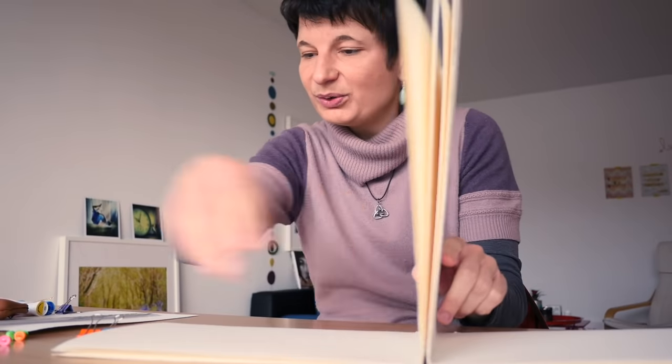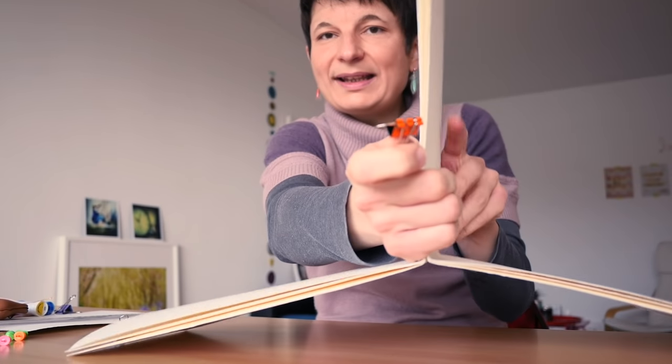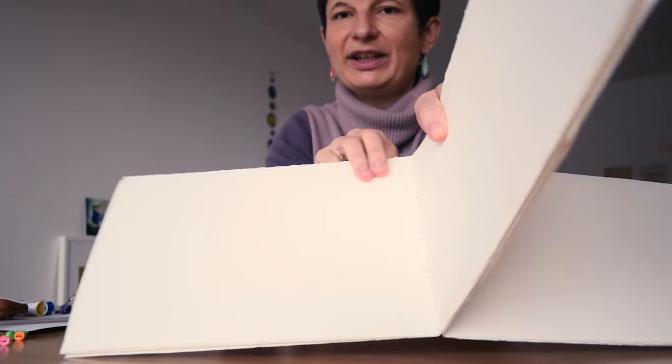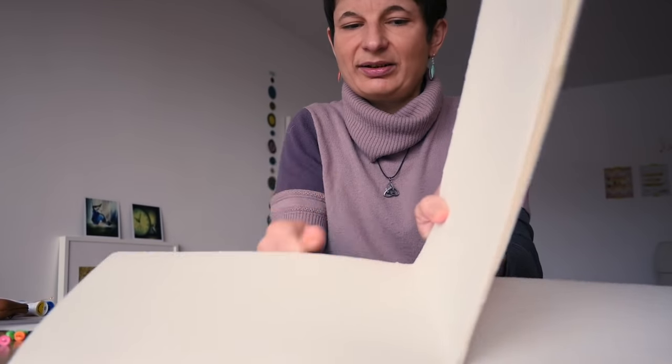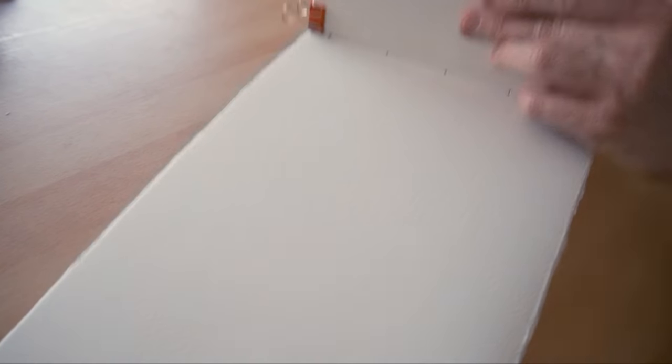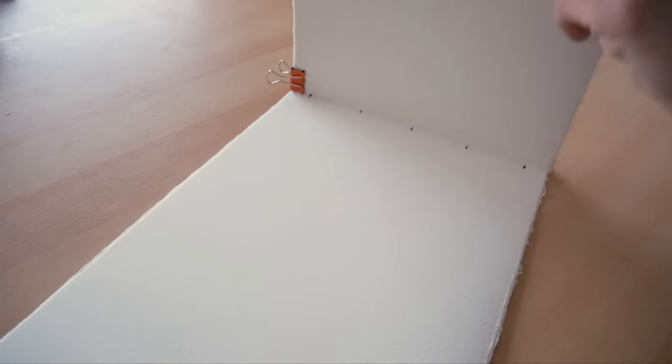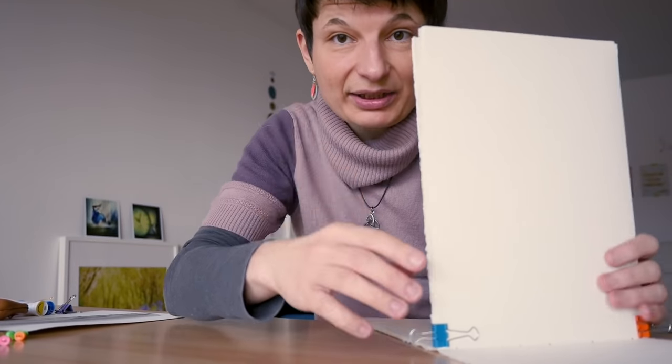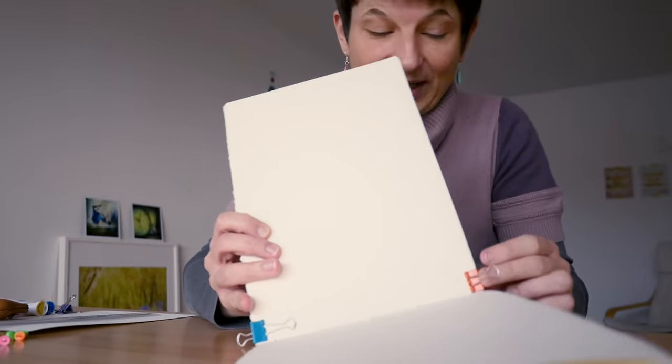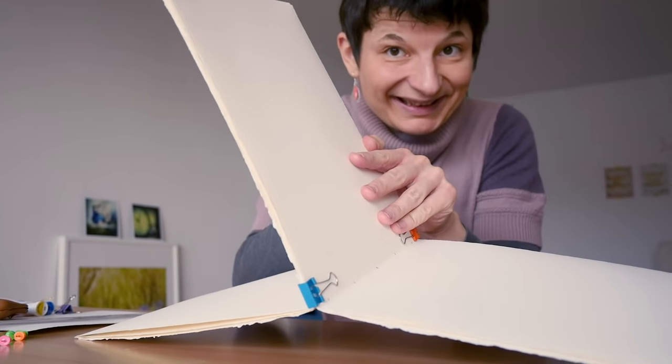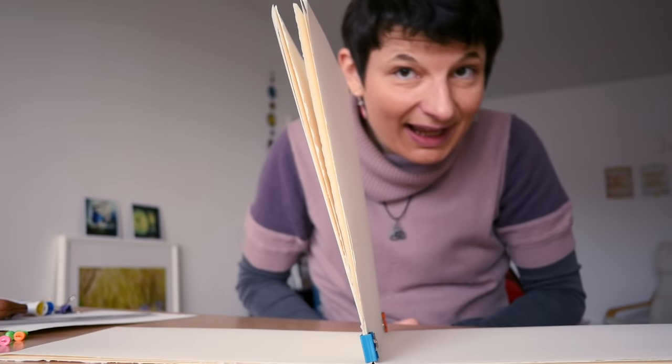We are going to use the bulldog clips to hold this middle part together. Open each signature by the middle and put your small bulldog clips just at the base. I can tell you it's a tremendous help. It's really, really easy like that to sew.